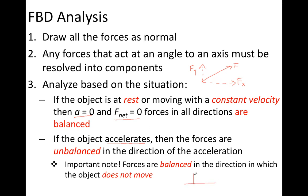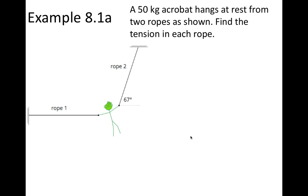A good example is an object accelerating across a floor. The up and down forces are balanced because there is no acceleration and no motion vertically, but the horizontal side-to-side forces are unbalanced to provide the horizontal acceleration. In this example, we have a 50 kilogram acrobat hanging at rest from two ropes as shown in the diagram, and we need to find the tension in each rope. We're going to start by drawing a free body diagram showing all the forces acting on the acrobat: the weight force acting down, the tension in rope one labeled T1, and the tension in rope two labeled T2.